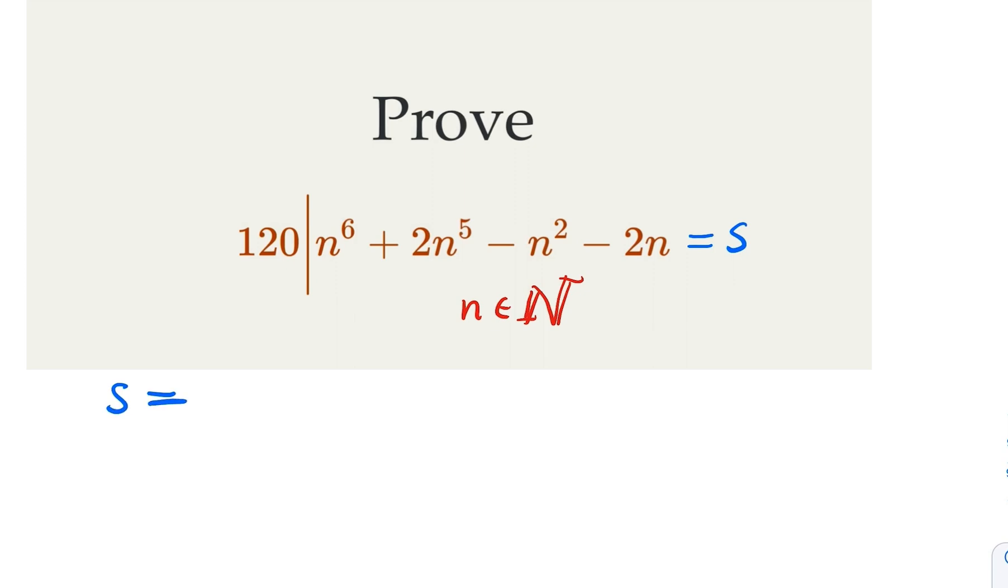Notice that the first two terms both have n plus 2. In the first case, what you have is n to the fifth power times n plus 2 and minus n times n plus 2. You have a common factor that is n plus 2, and then n to the fifth minus n. So you can take out n here.